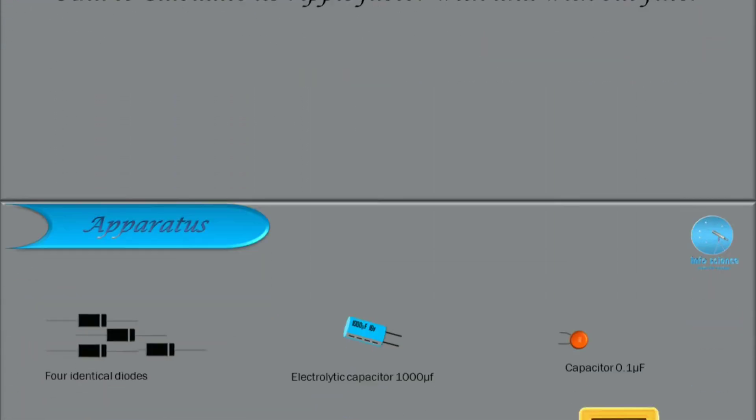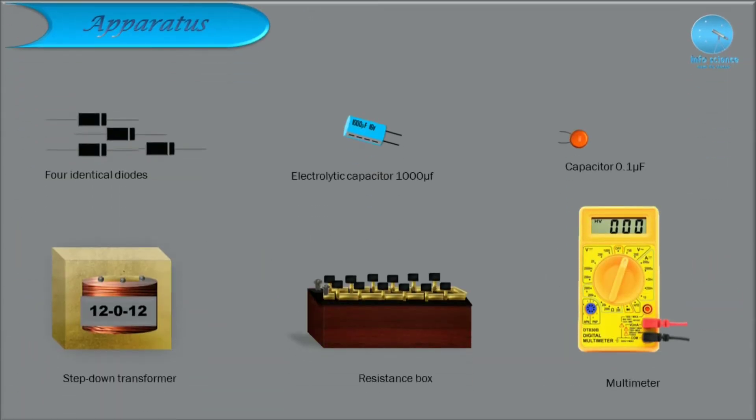We can move to the apparatus required. The apparatus includes: four identical diodes, a 100 microfarad or 1000 microfarad electrolytic capacitor, a 0.1 microfarad ceramic capacitor, a step-down transformer, a resistance box, and a multimeter.